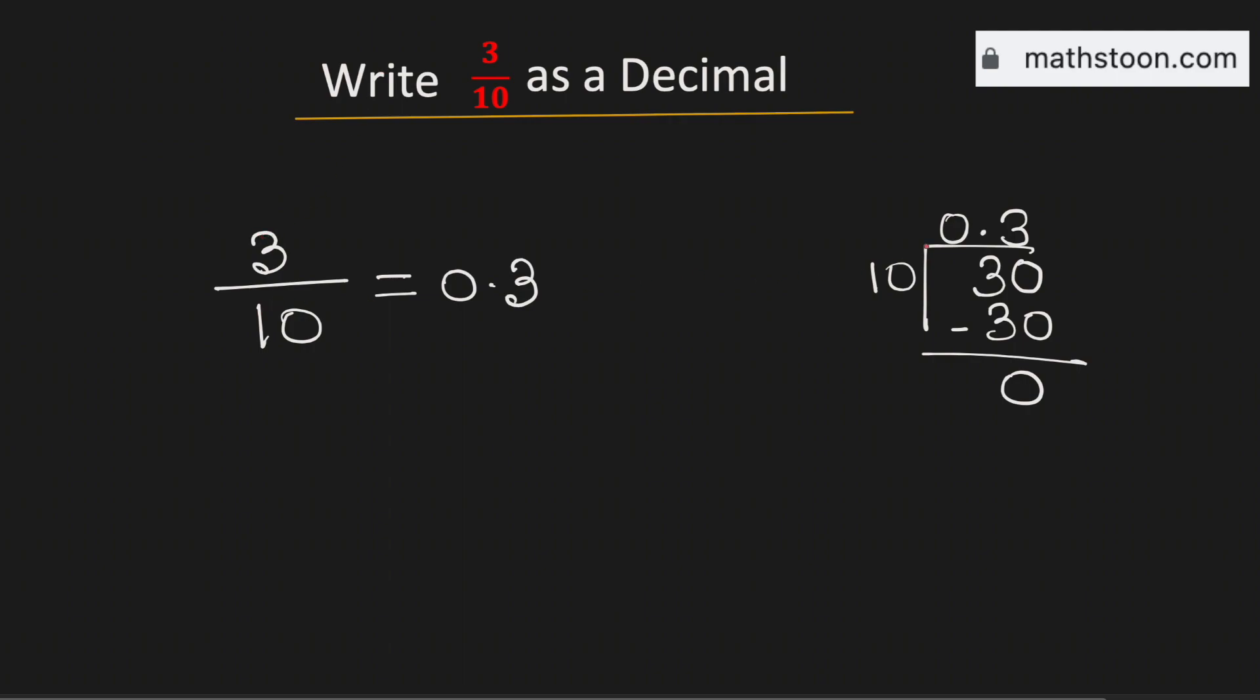So 3 over 10 as a decimal is equal to 0.3 and it's verified, and this is our final answer.